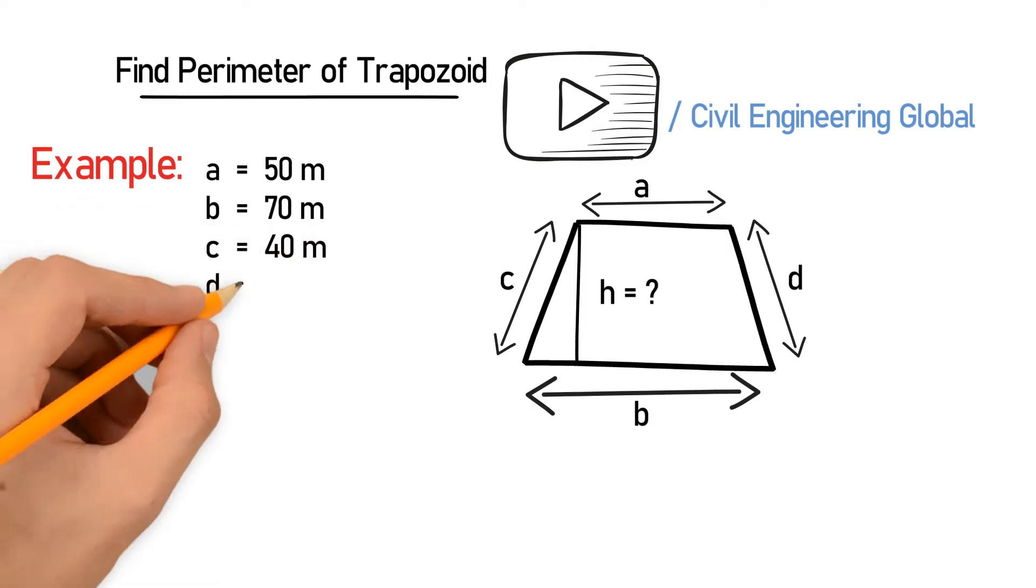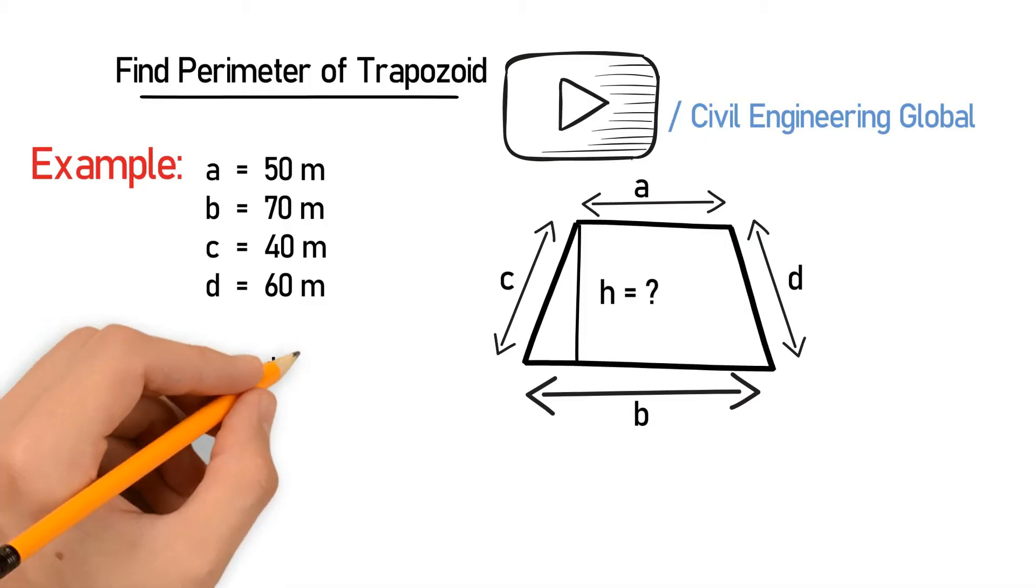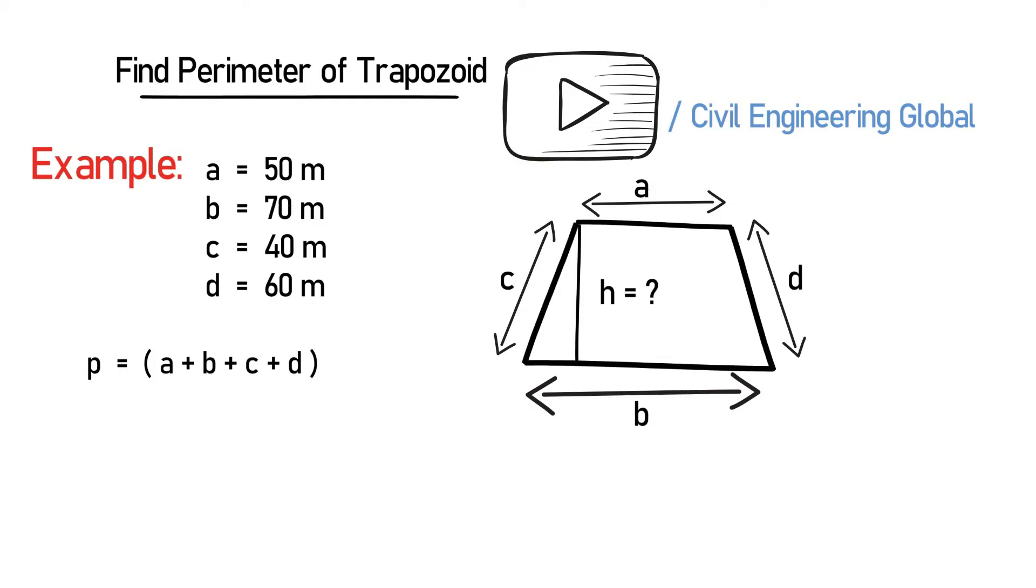So to find the parameter we know the formula: p is equal to a plus b plus c plus d. So to put the value of a, b, c and d sides, we get parameter p is equal to 50 plus 70 plus 40 plus 60. So after adding this you will get the parameter p is equal to 220 meter.